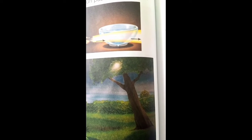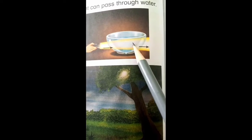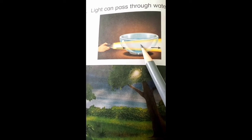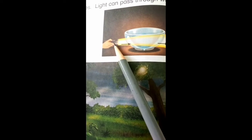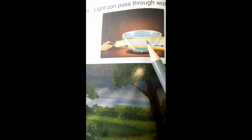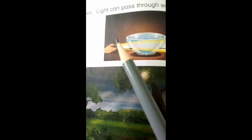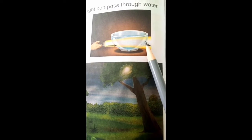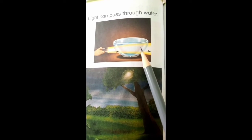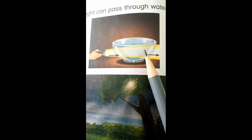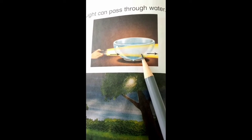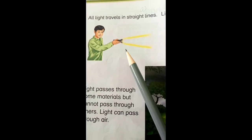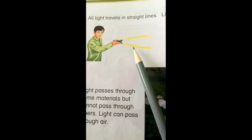Light can pass through water — light water se pass through karti hai. For example, if there is a transparent bowl with some water in it and we shine a torch from one side, light passes through the water easily. This picture shows you that light can pass through water and that light travels in straight lines.